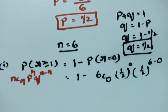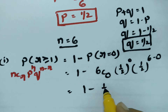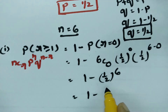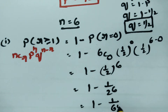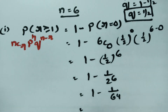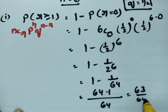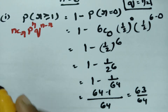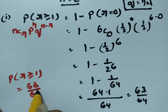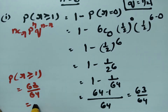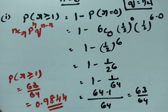That gives 6 minus 0 = 6 in the exponent. So the value is 1 minus 6C0 × (1/2)^6 = 1 minus 1 × (1/2)^6 = 1 minus 1/64. Taking 64 as LCM, this is 63/64, or approximately 0.9844. This is the first solution.